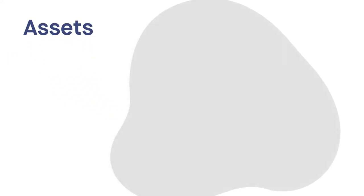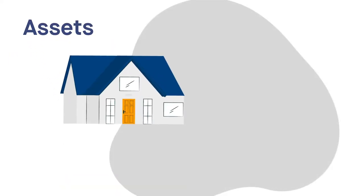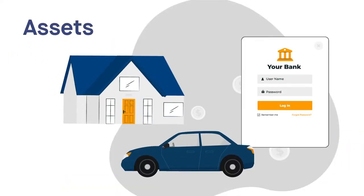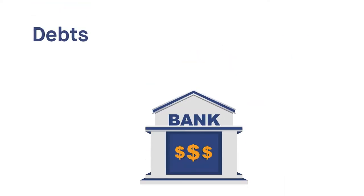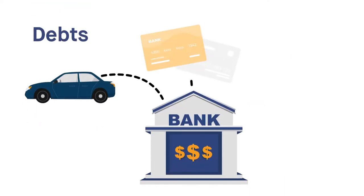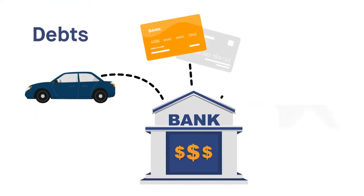Assets are all the property you own, like a house, car, or bank account. Debts are the money you owe, like a car loan, a line of credit, or a mortgage.